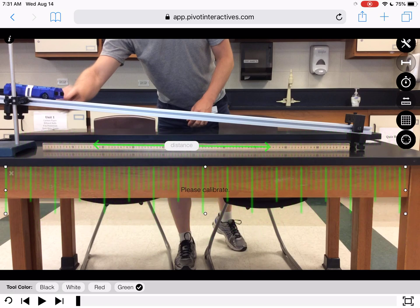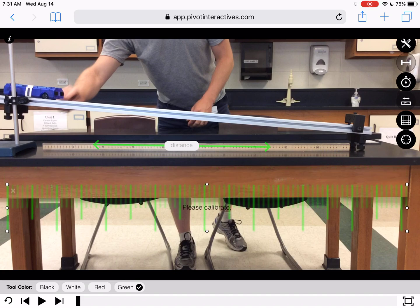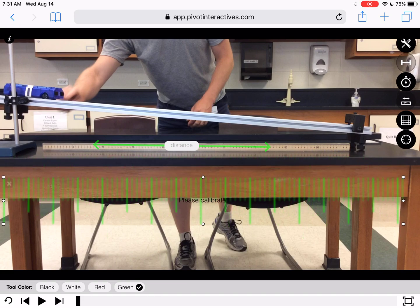You'll notice on the meter stick which is what we're going to use, the measurements aren't clear, they're all fuzzy and it says please calibrate. So before I use that I need to tell the meter stick, tell Pivot how long something is in the video.